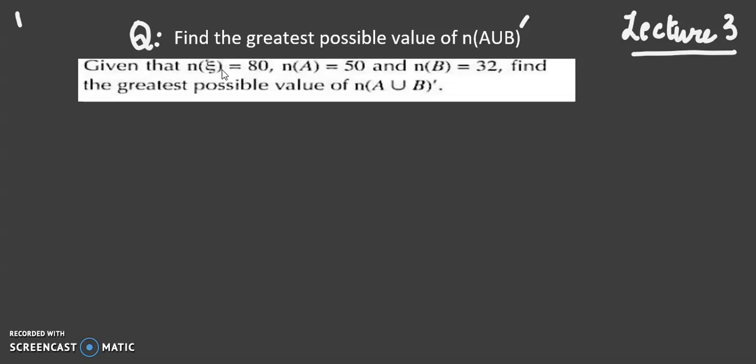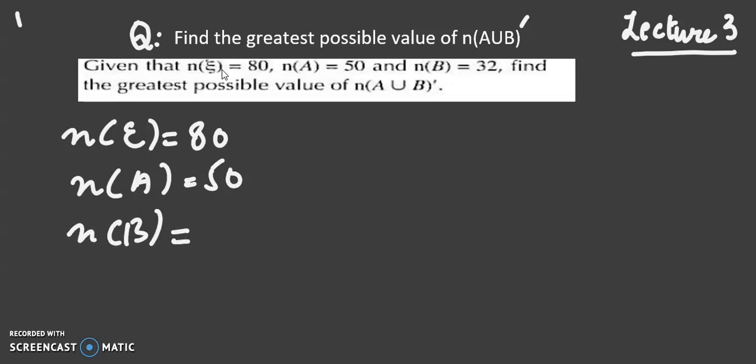The given values are: the universal set has number of elements equal to 80, number of elements in set A are 50, number of elements in set B is 32, and we have to find the greatest possible value of A union B whole complement.